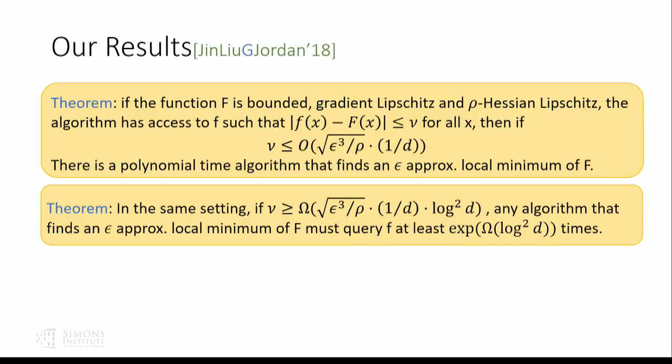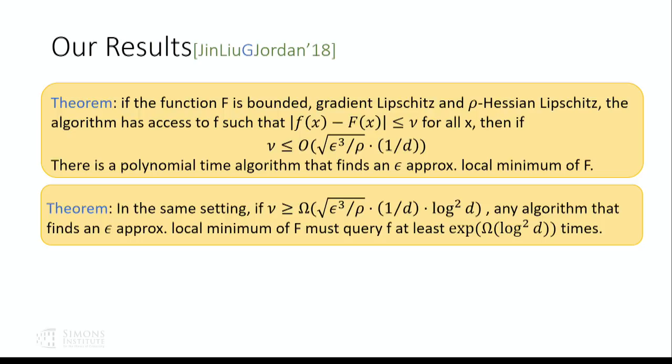Our algorithm and paper is not the first result to consider this setting. Previously, Yu Chen Zhang, Percy Liang, and Moses Cherica gave a more complicated algorithm for this setting using sampling techniques. Not only is their algorithm more complicated conceptually, but the dependency is also much worse compared to our result — we actually get a tight guarantee here.